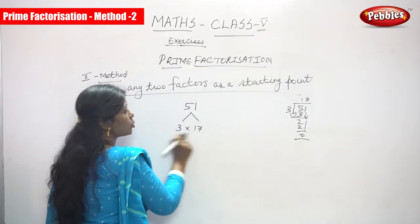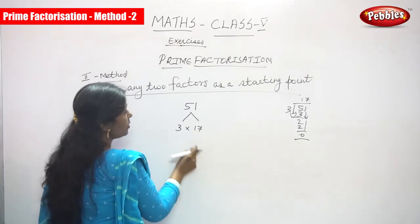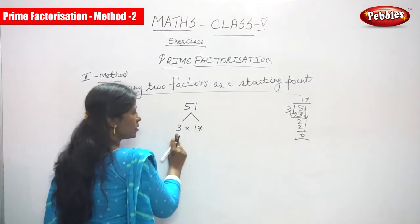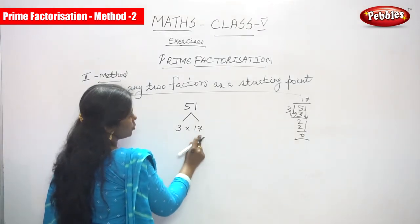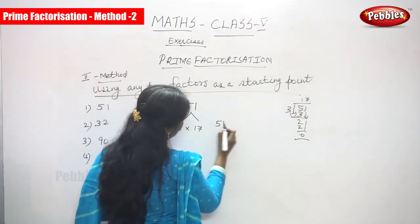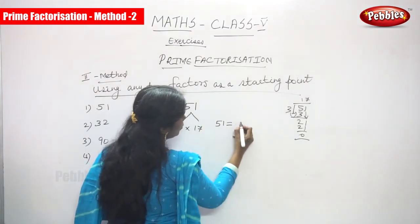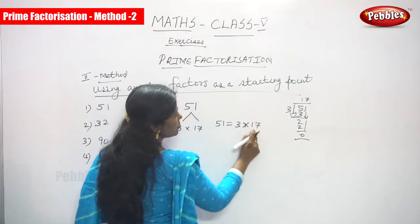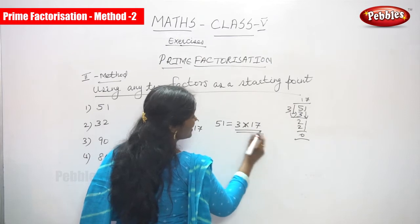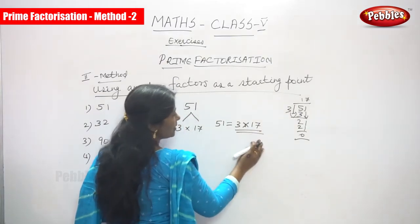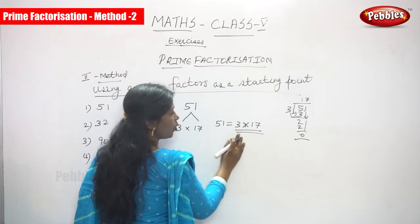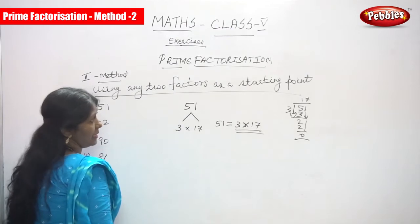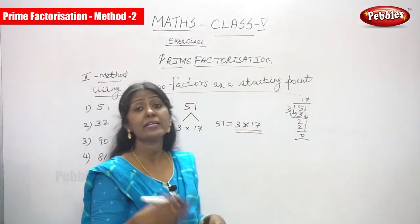So 3 into 17 gives 51. These two are the factors. We should not split 17 because it is a prime number, and 3 is also a prime number. So 51 is equal to 3 into 17. Both 3 and 17 are prime numbers, so we can call this prime factorization using any two factors as a starting point.